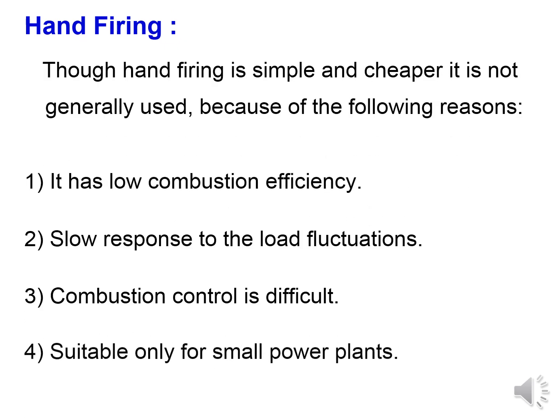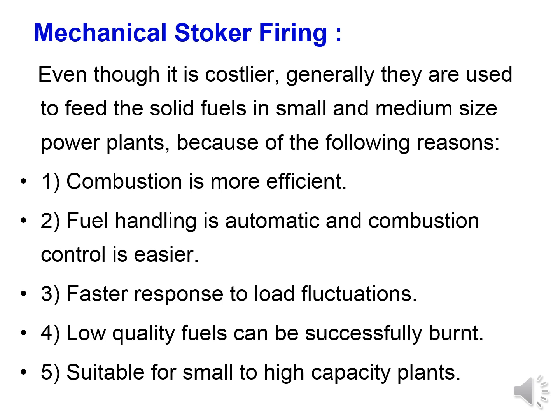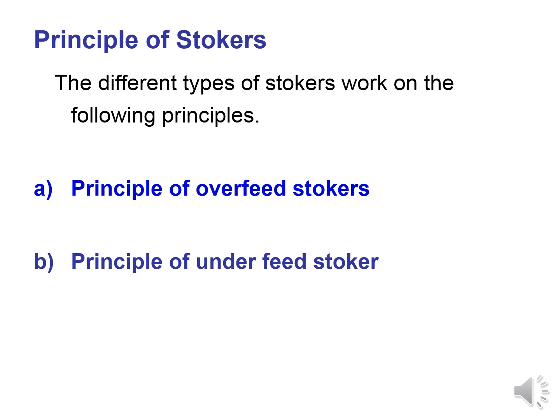Hand firing is simple and cheaper but is not generally used due to low combustion efficiency, slow response to load fluctuations, and difficulty in combustion control. Mechanical stokers are used instead because combustion is more efficient, fuel handling is automatic, response to load fluctuations is faster, low-quality fuels can be successfully burnt, and they are suitable for small to high capacity plants. The two types are over-feed stoker and under-feed stoker.